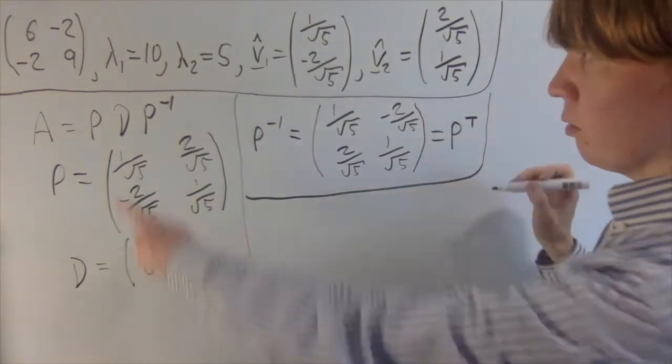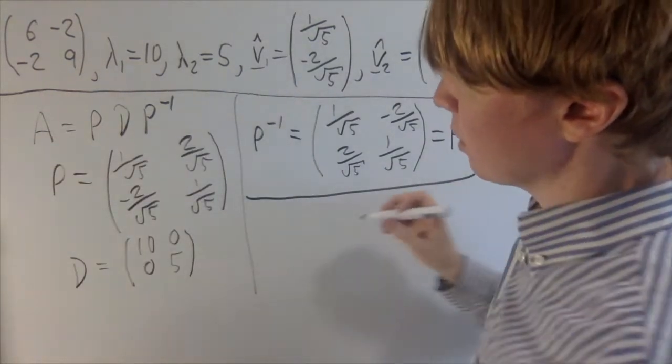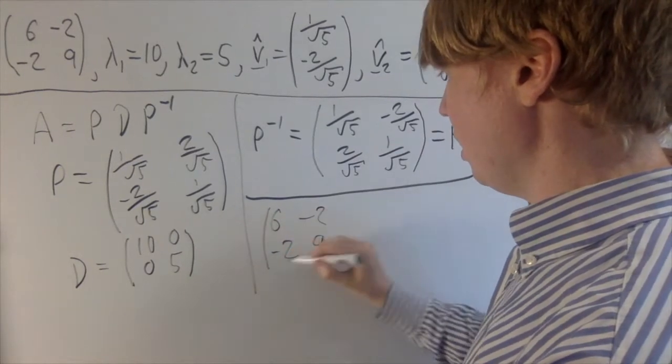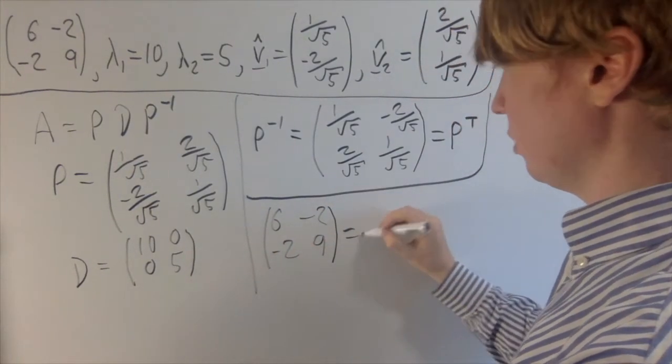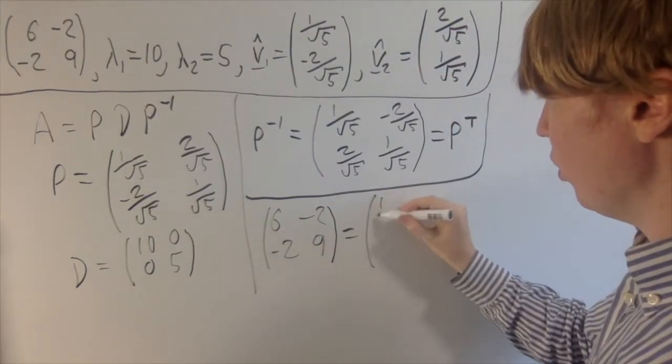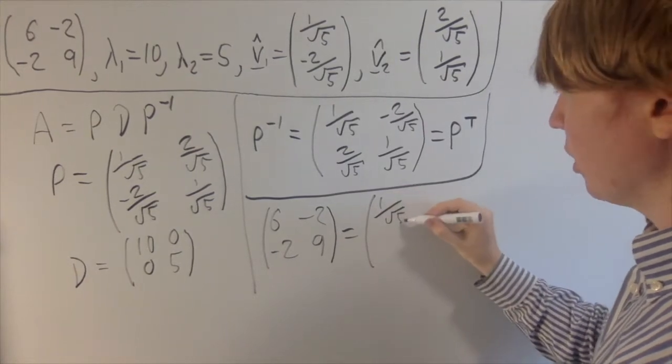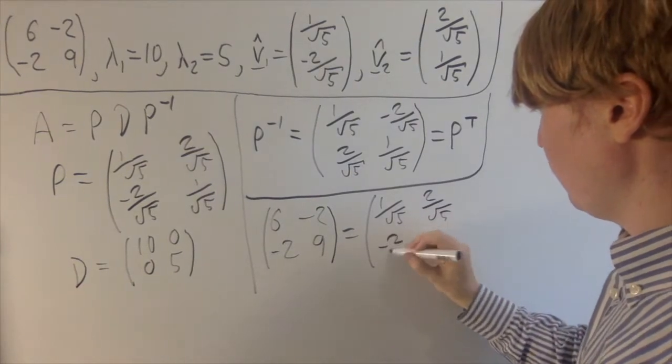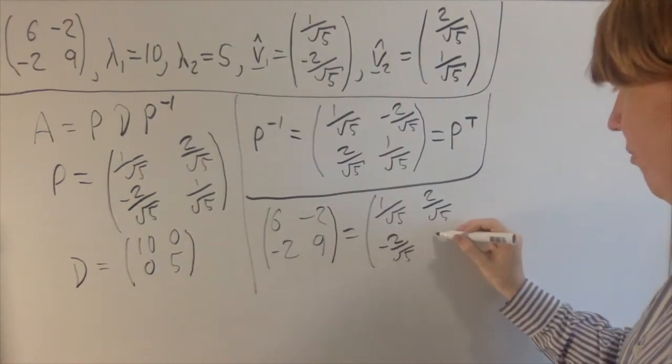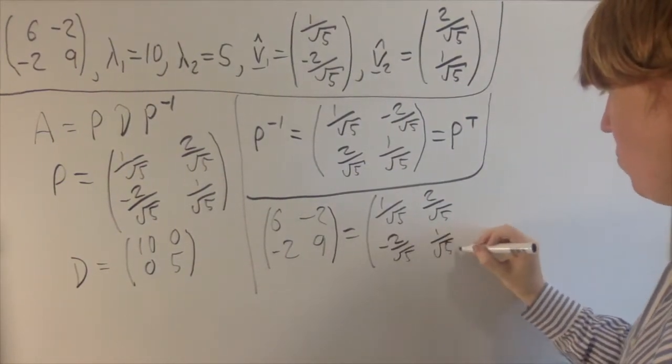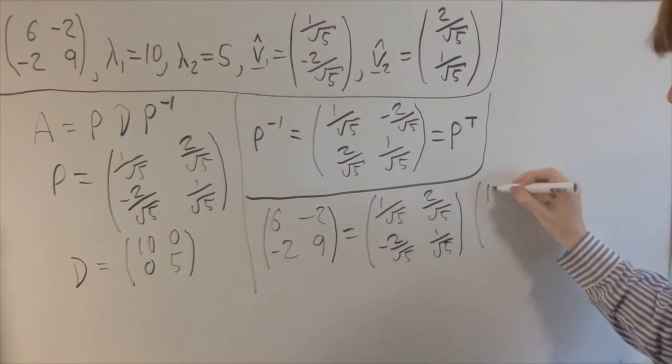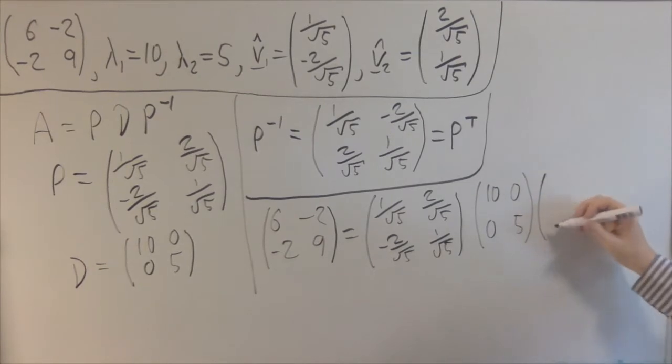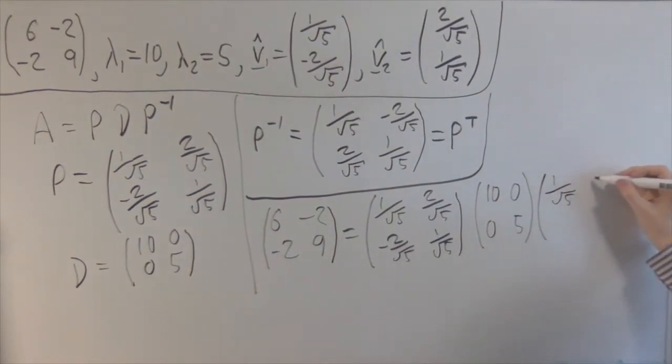So now we're ready to, what I'll do is I'll write the original matrix A: 6, minus 2, minus 2, 9, in this form that we've been aiming for. So we've got 1 over root 5, we put our P matrix here, and then multiply by the diagonal matrix, and then finally multiply by P inverse as well.